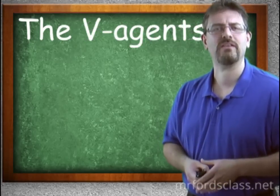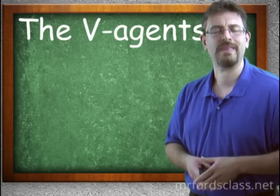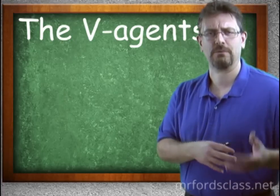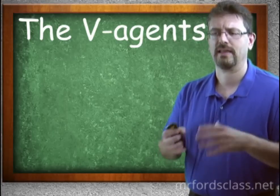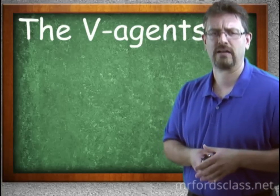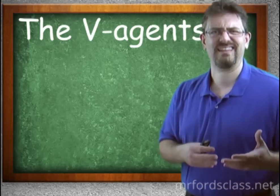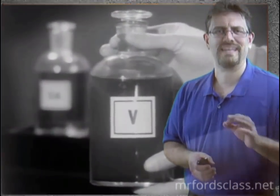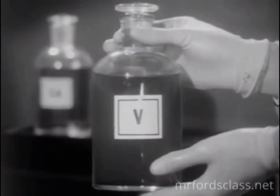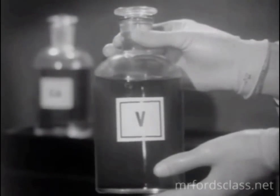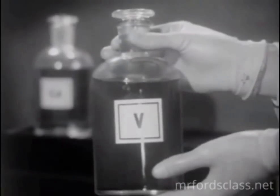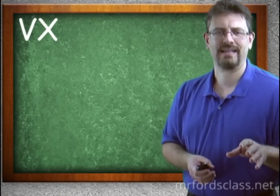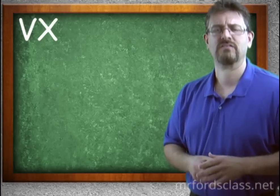Not to be outdone, in the late 1940s another series of nerve agents was discovered by the British — also by accident, when someone developing an herbicide pesticide noticed something different and sent it to military researchers. They recognized it could be used as a nerve agent. This became the V-Series — V standing for various things depending on who you read, such as victory or venomous. This series includes the very deadly VX. Of all the nerve agents, VX is the most deadly and Tabun is the least deadly — though you wouldn't want to be exposed to either one.